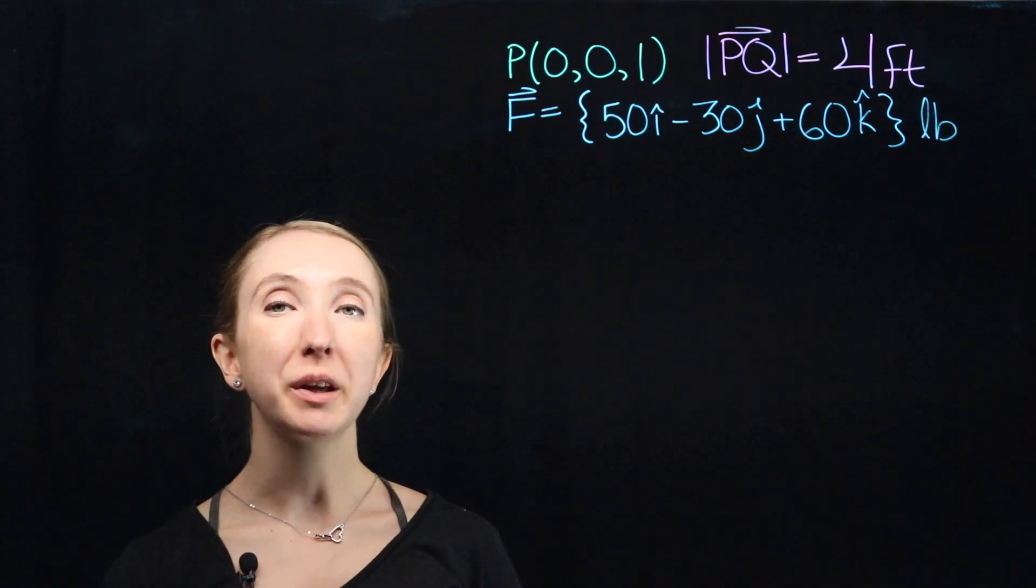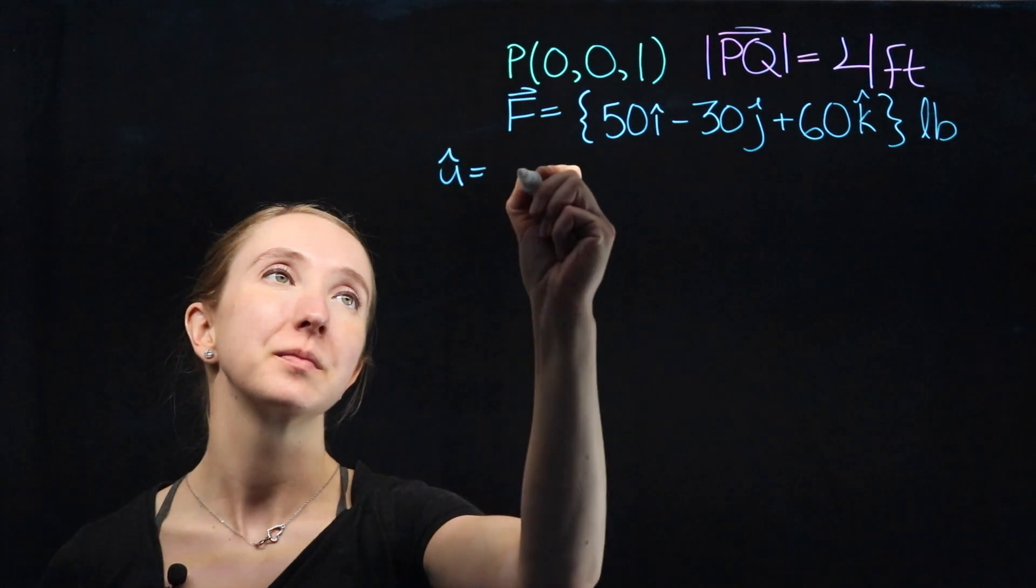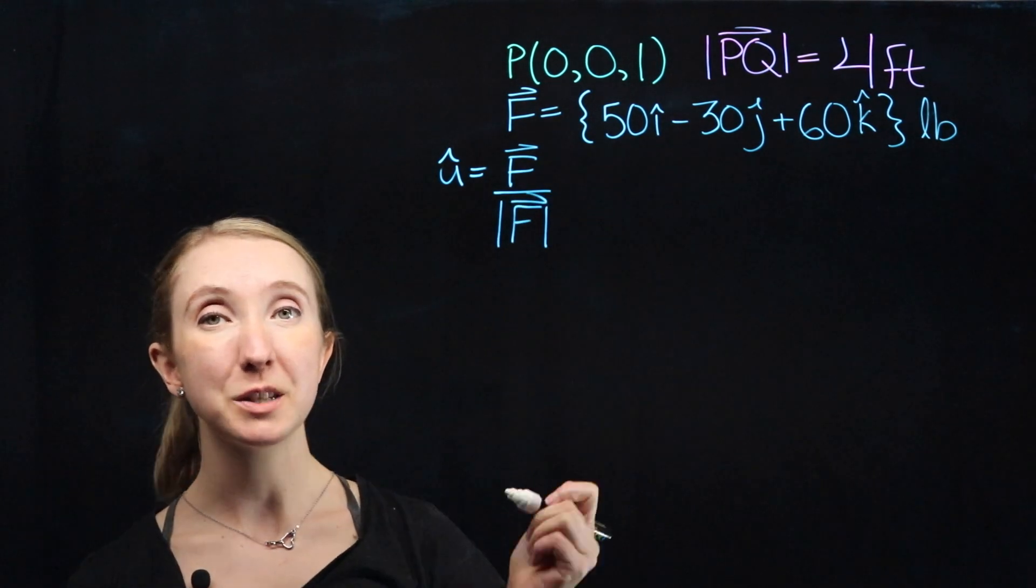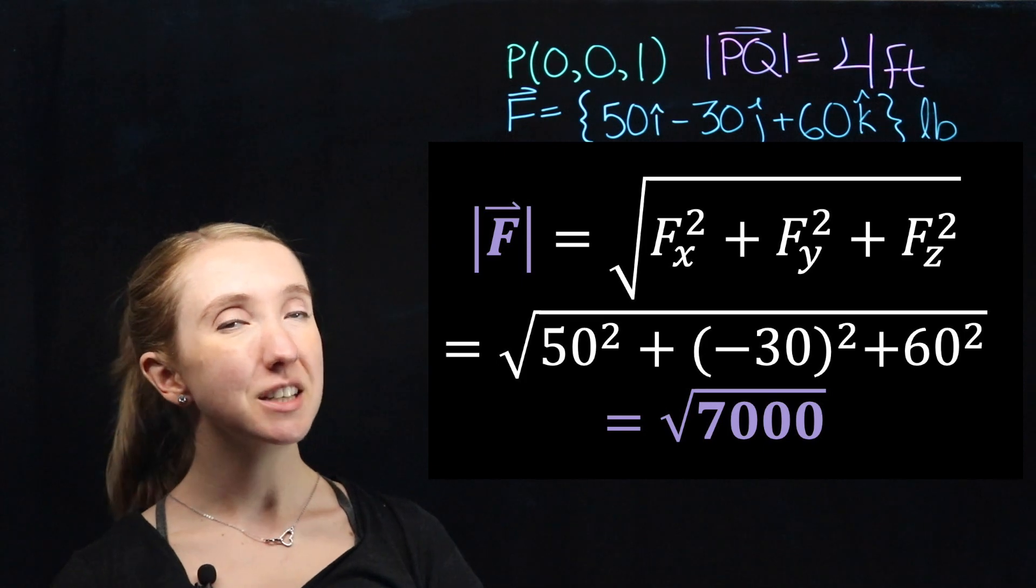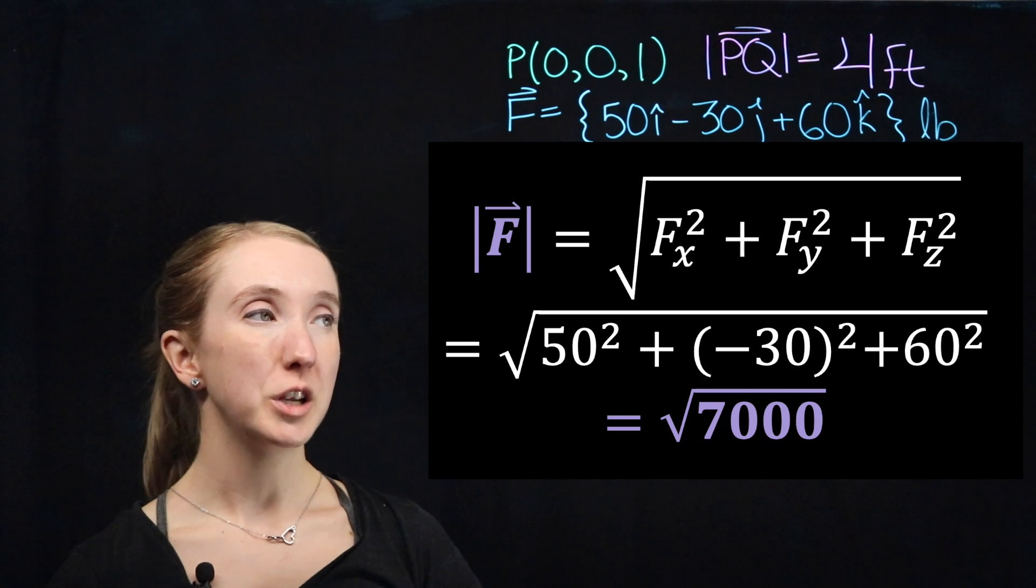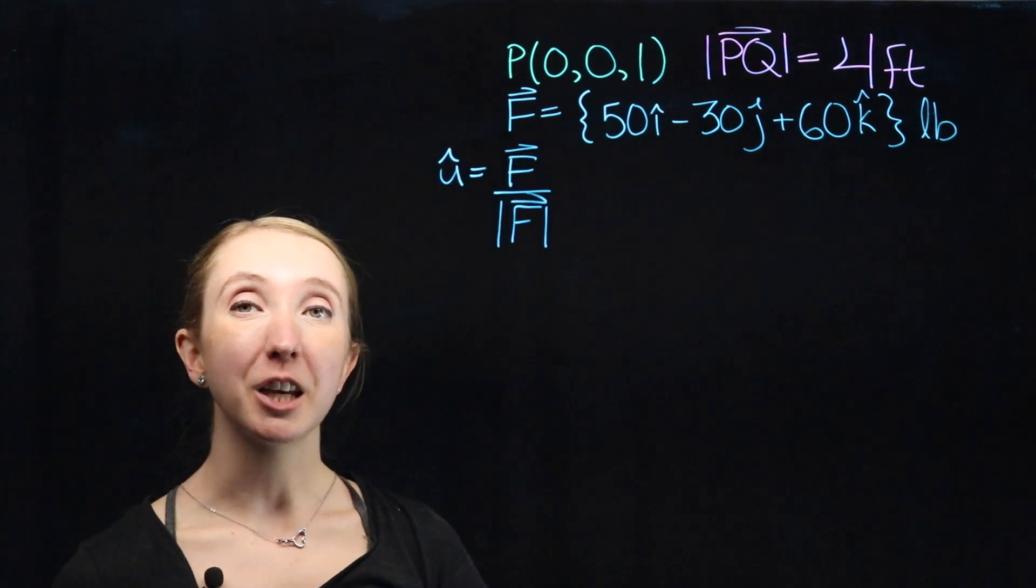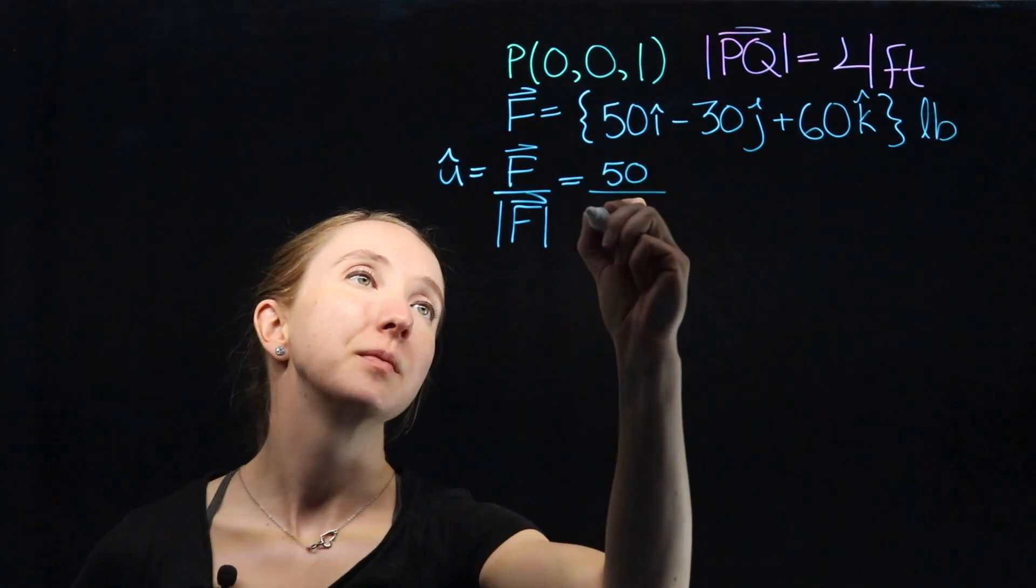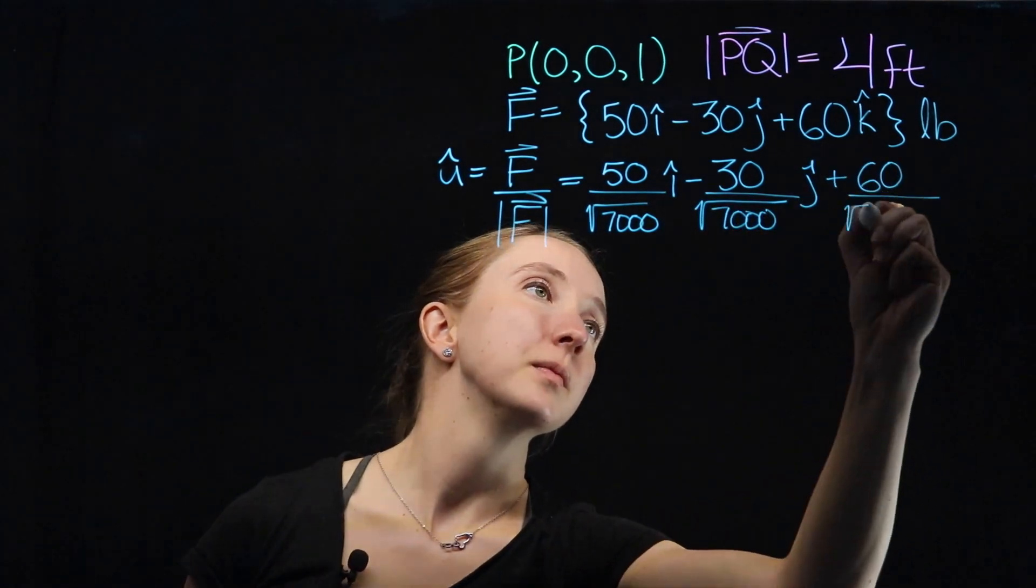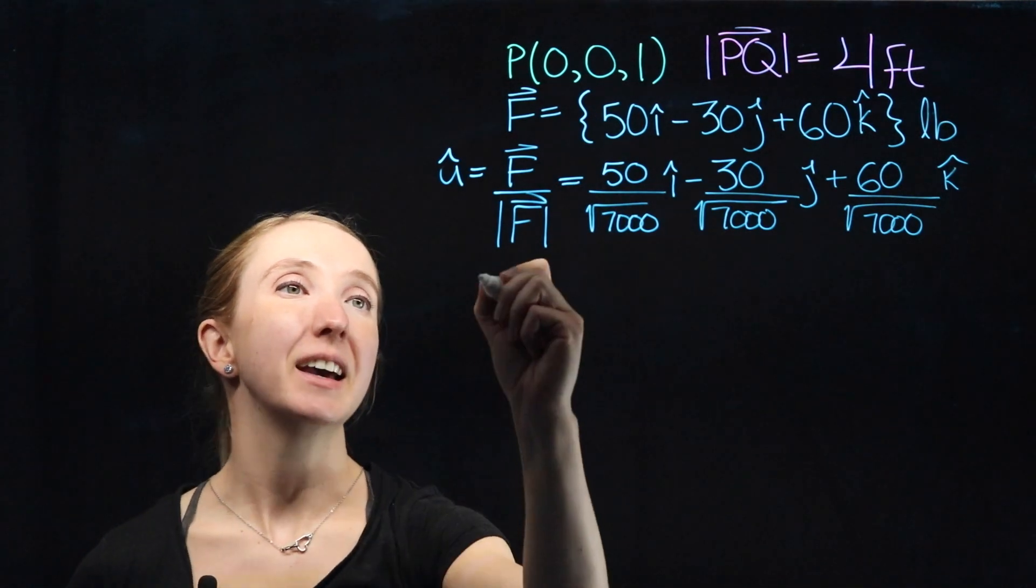To find the coordinates of point Q, the first thing we need to do is find our unit vector. That means we need the magnitude of our force vector. The magnitude is equal to the square root of the sum of each of our components, which in our case is the square root of 7,000. And that gives us a unit vector of... And to the nearest three decimal points, we get...